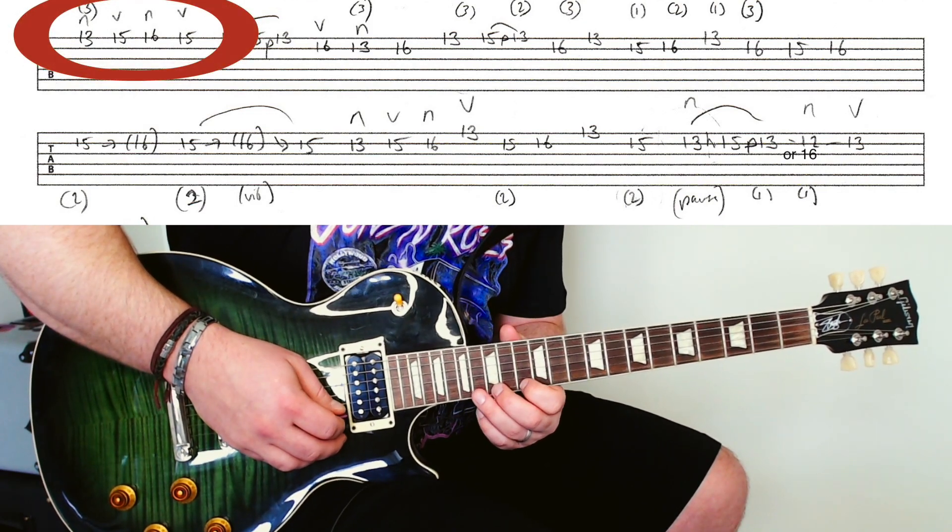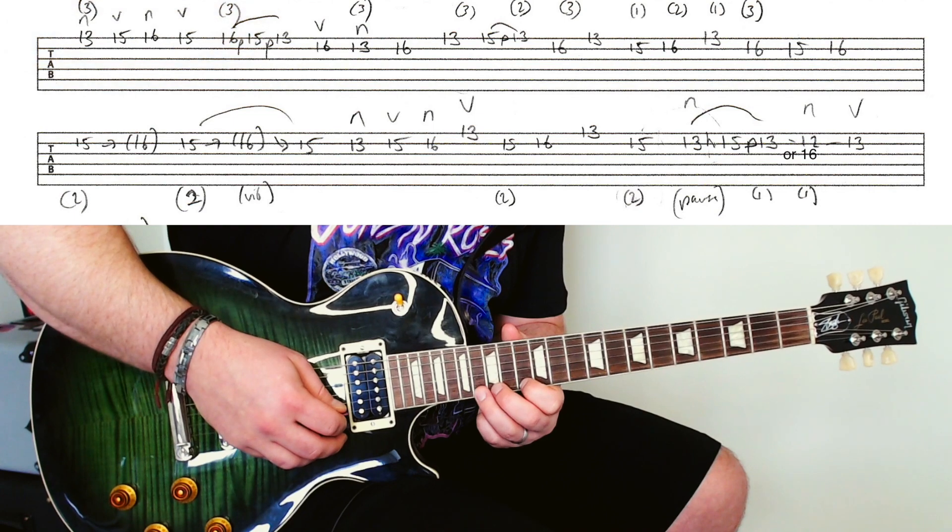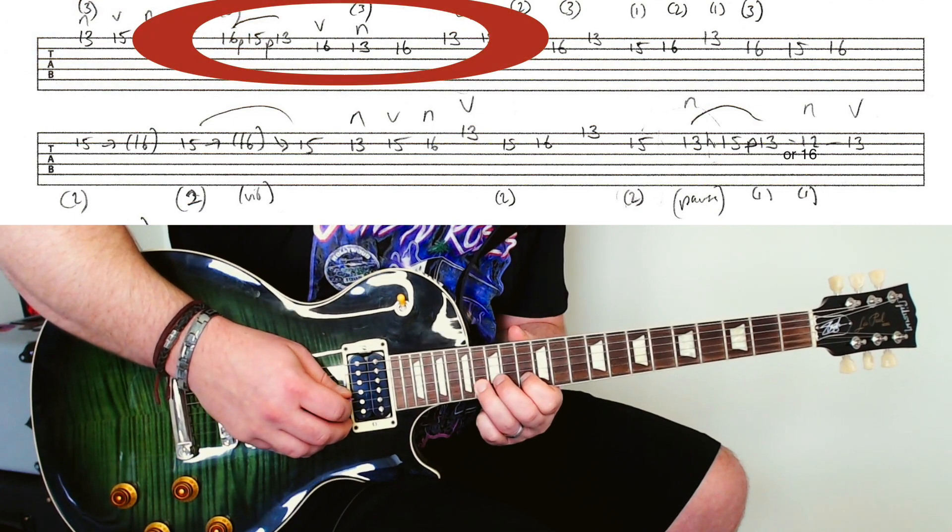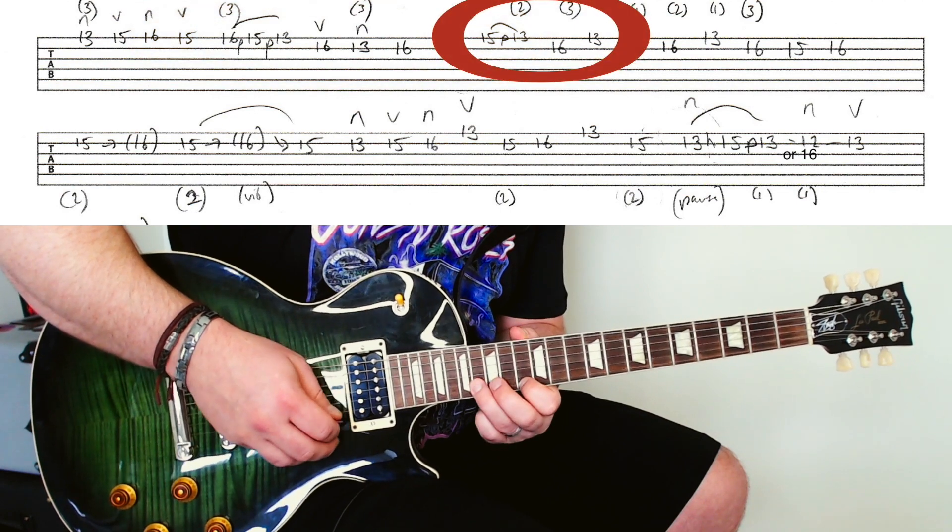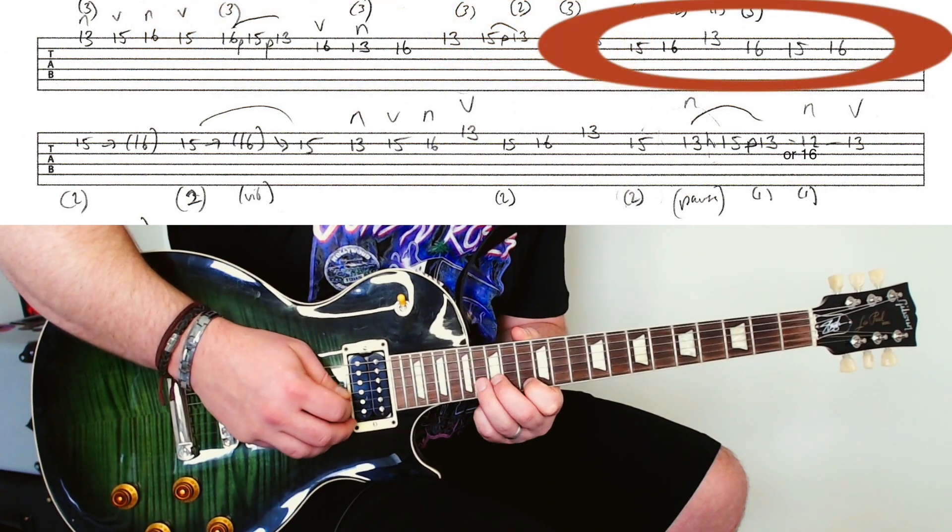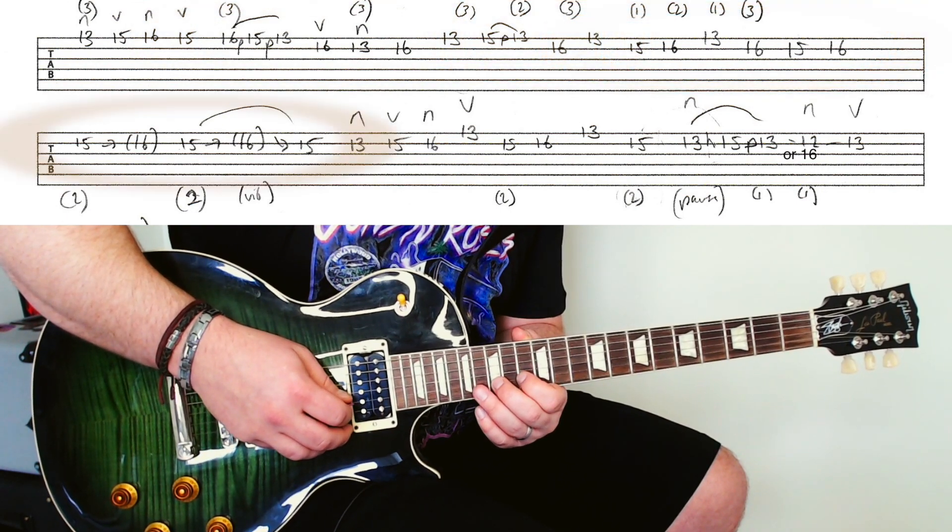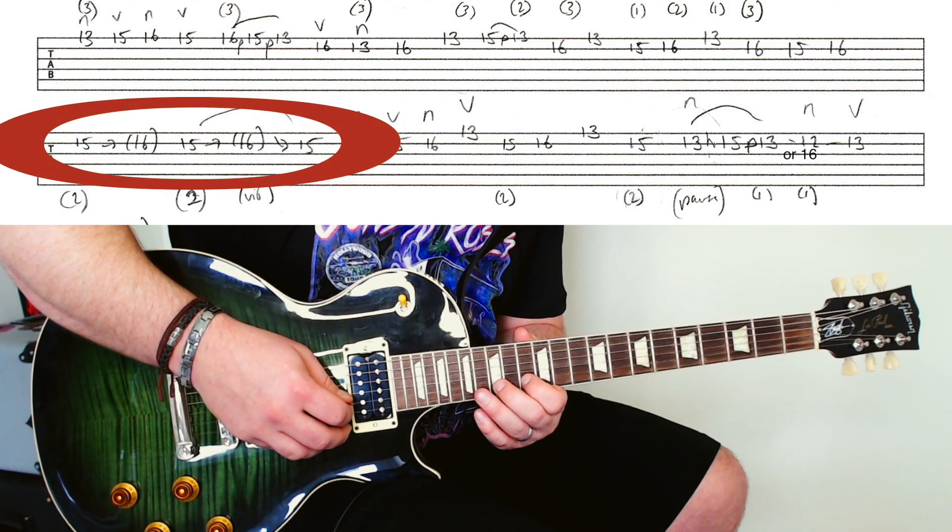So it starts like this: down, up, down, up. Pull-offs here. And it's another pull-off. Little bend on the second finger here. And then you do it again.